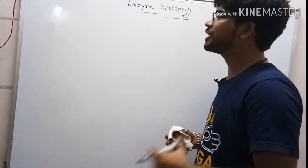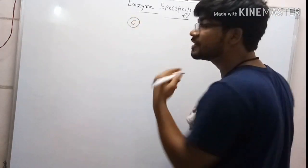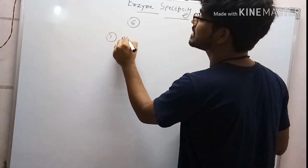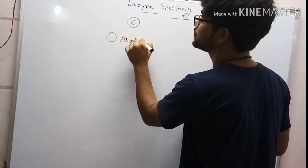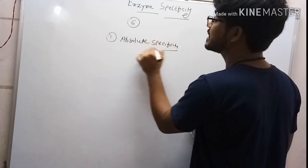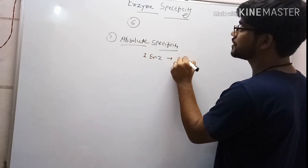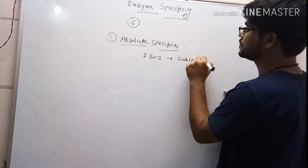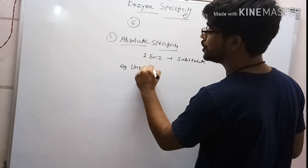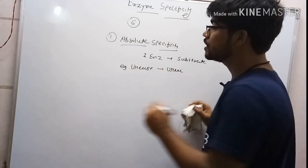Hello friends, in today's lecture we are going to talk about enzyme specificity. There are six different types of specificity that enzymes have. The first is absolute specificity. As the name suggests, only one type of enzyme works on a particular substrate. For example, urease only works on urea.